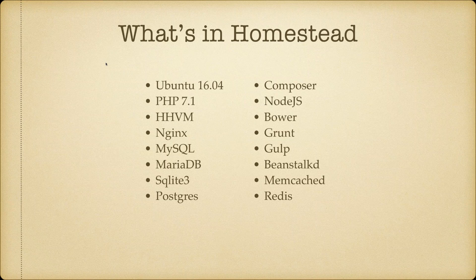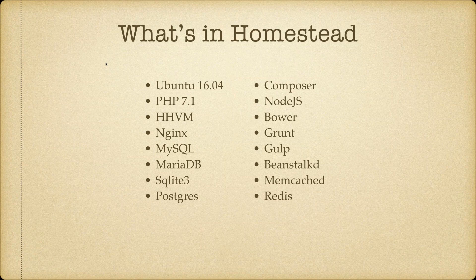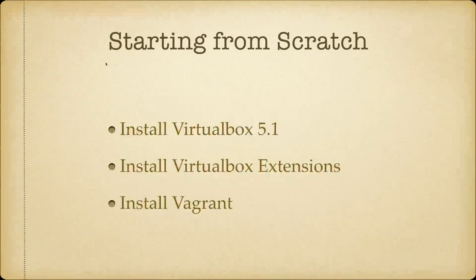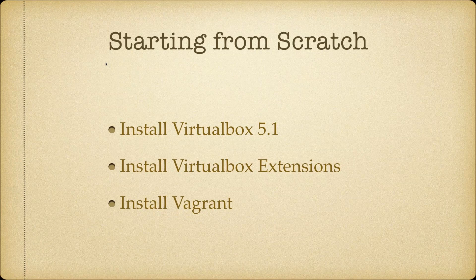What's in Homestead? Since it comes from Laravel, a lot of what's in Homestead is what you'd expect in a modern PHP stack. It's built on Ubuntu 16.04, running PHP 7, with HHVM support. It's Nginx out of the box. You have the option of MySQL or MariaDB, SQLite support, and Postgres right out of the box. We also have tons of Node.js packages pre-installed, up-to-date Composer, Memcache, Redis, and even Beanstalk — all already configured with sensible defaults.